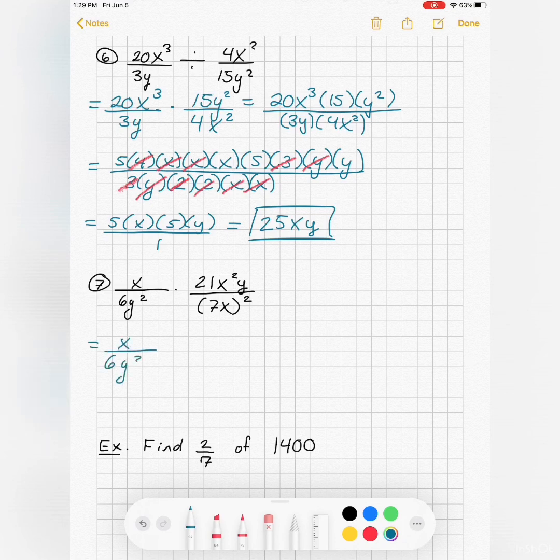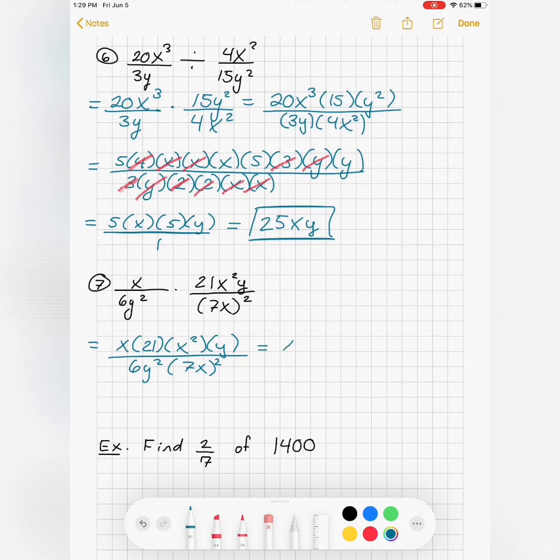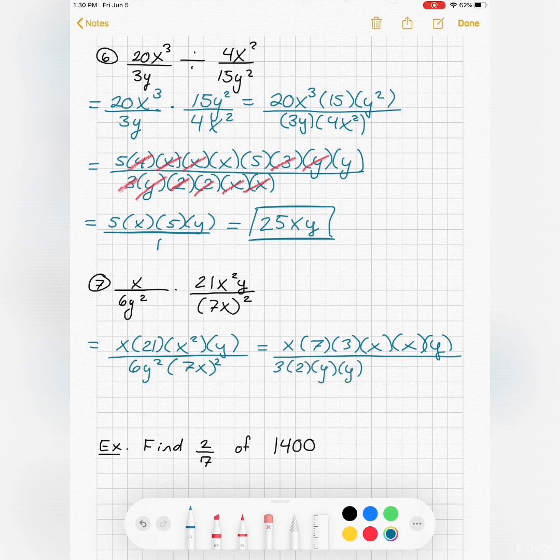Same thing. First fraction stays the same. Oh, this one's a multiplication, so this one will be a little review then. So multiplying, if you just multiply straight across, let's see, it's going to be x is 21 x squared y. So it's x, 7 times 3, x times x times y, 3 times 2 times y times y.